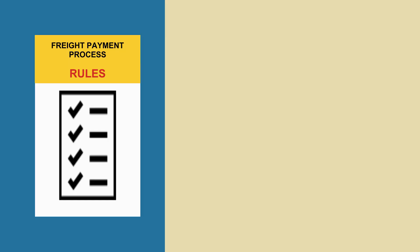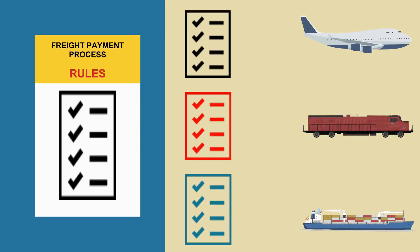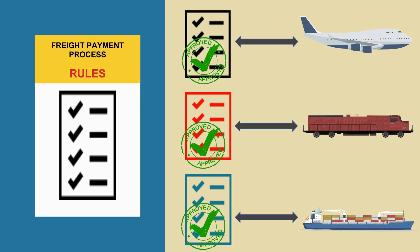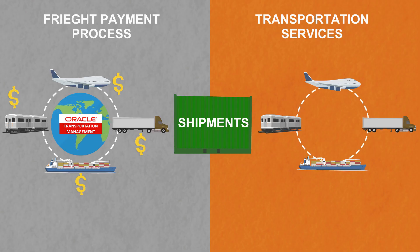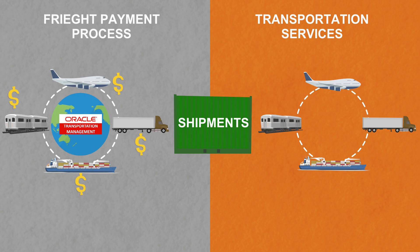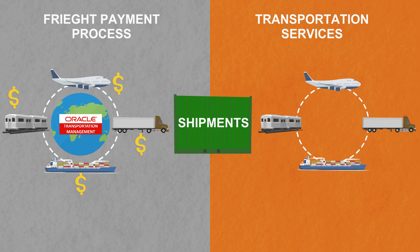Certain rules can be set up to automate the freight payment process and determine how invoices should be matched to shipments, as well as when to approve invoices for payment. Buy shipments are used in the freight payment process and represent transportation services purchased from the service provider.